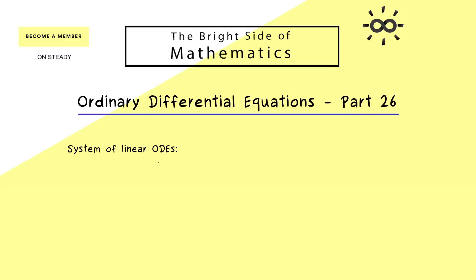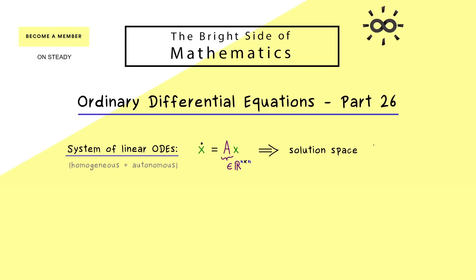Let's start with what we already know about systems of linear ODEs which are autonomous and also homogeneous. We have the explicit formulation where x-dot equals Ax, where A is an n times n real matrix, so the whole ODE lives in the real numbers. We have already shown in part 19 that the solution space of this system is an n-dimensional vector space, named S0.